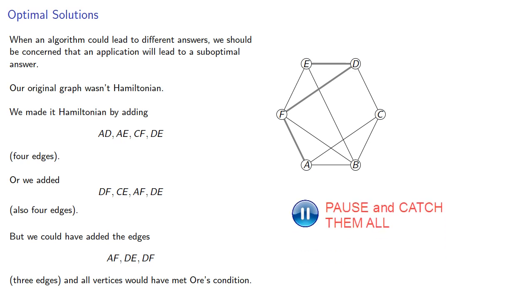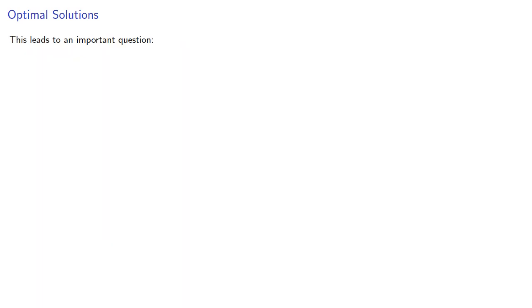Maybe just find one, because finding all of them is a hard problem. And this leads to an important question. What are the fewest number of edges we need to add to a graph to make it Hamiltonian?